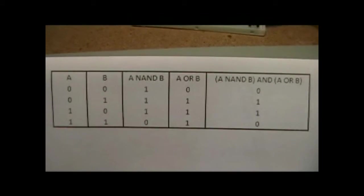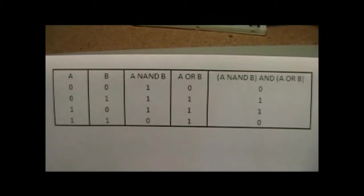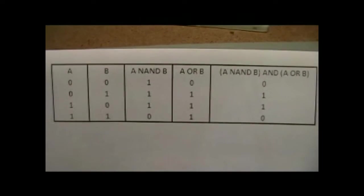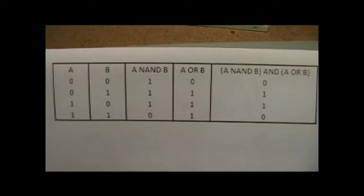The fourth column A or B is your standard OR gate. You get a one any time either or both of them is on.